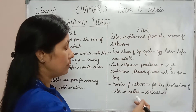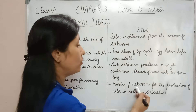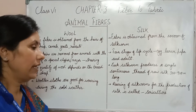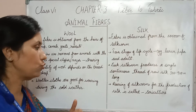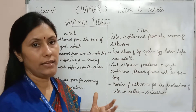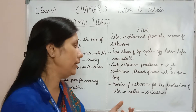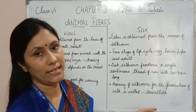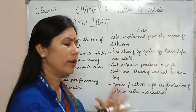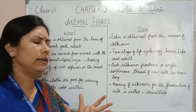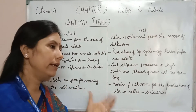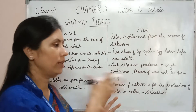The breeding of silkworms for the production of silk is called sericulture. We have studied this in the first chapter. This process was first started in China and India, and later spread to the Middle East and Europe.